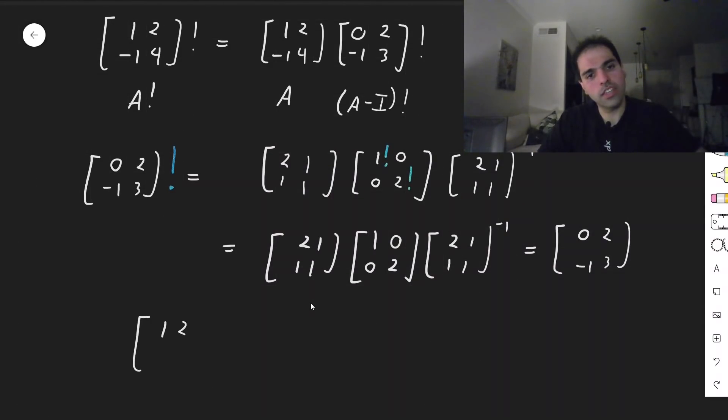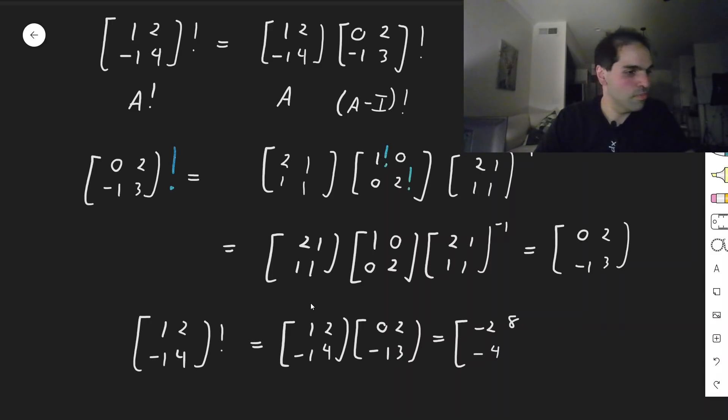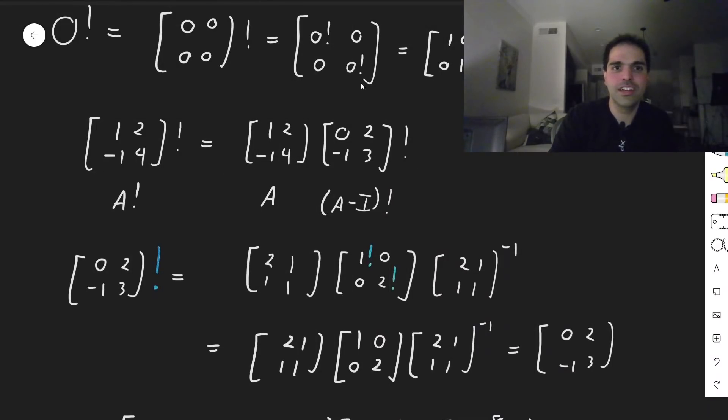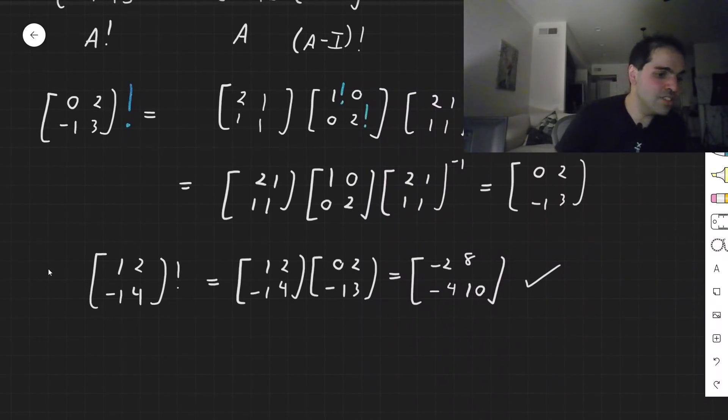So really, all we need to check, is it true or not that [1, 2; -1, 4] factorial is the same as [1, 2; -1, 4] times [0, 2; -1, 3]? Well, let's do the calculation. So we get -2, and then 2 + 6, 8, and that's -1 + 4, no sorry, 0 - 4, -4. And lastly, 2 + 12, which is 10. Do we have this equals to that? Yes, indeed, because we just calculated before, a couple of steps before that the factorial is here. Alright. So indeed, this is true.